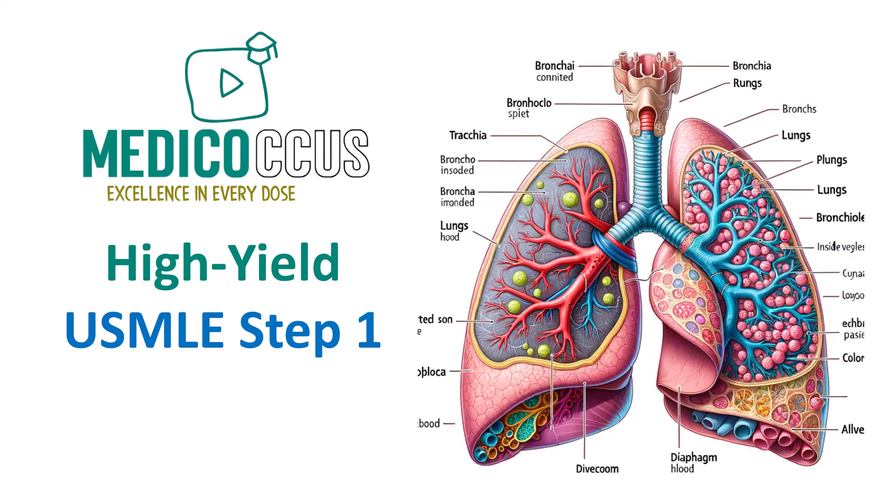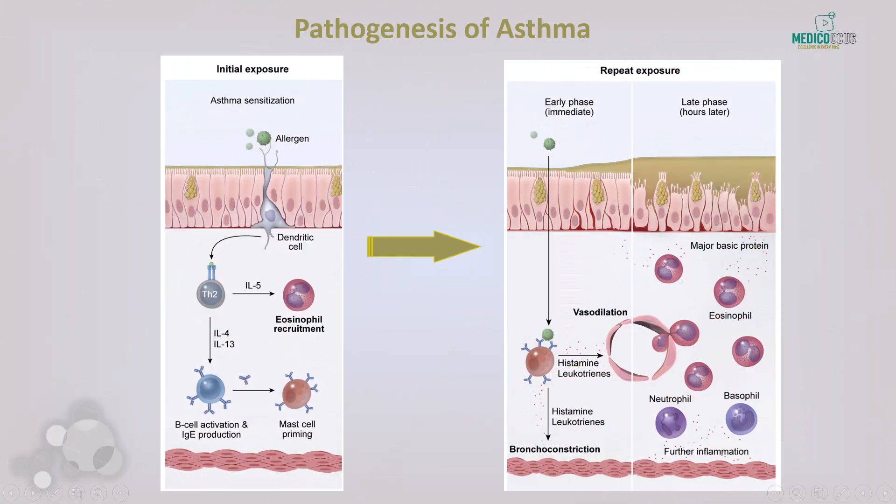Hello everyone and welcome to Metacaucus video series where we'll explore some high-yield USMLE Step 1 recall questions. In this video we're focusing on asthma, which is one of the most commonly tested topics on the USMLE exam. Asthma is a chronic inflammatory disorder characterized by airway hyper-responsiveness, reversible airflow obstruction, and airway inflammation.